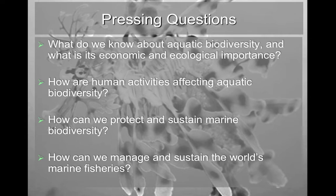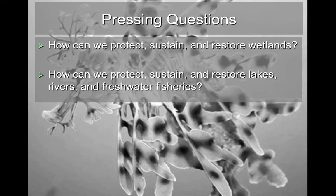Secondarily, how are human activities affecting aquatic biodiversity? This is actually very difficult because a lot of times human activity has been going on for a long while, and therefore we don't necessarily know what kind of biodiversity we had prior to that activity. We also want to talk about protective measures — how do we sustain marine biodiversity, enact protective laws, manage marine fisheries, protect and restore wetlands, and protect lakes, rivers, and freshwater fisheries.